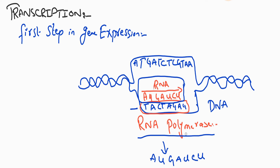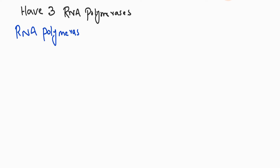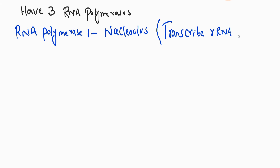The primary transcript is antiparallel to the strand of DNA. The nucleus of eukaryotes has three RNA polymerases. RNA polymerase 1 is located in the nucleolus and transcribes ribosomal RNA, including 18S, 28S, and 5.8S ribosomal RNA.